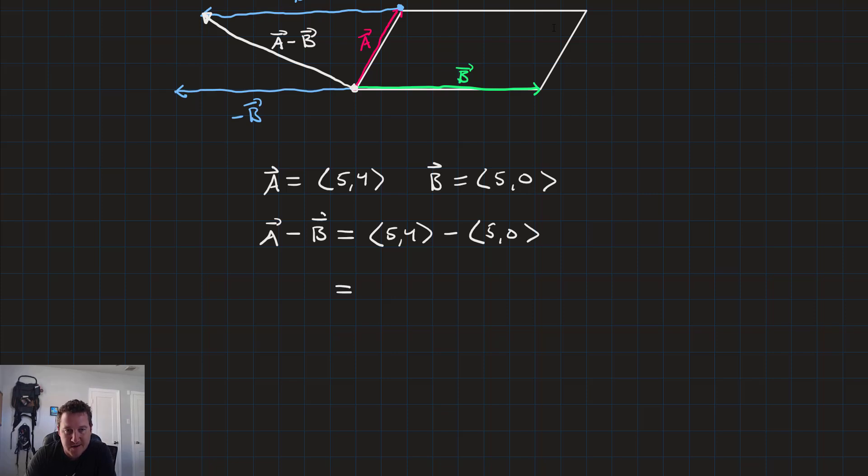A minus b is equal to 5 and 4 minus 5 and 0. And when we do it this way, we can just do subtraction like normal. 5 minus 5 and 4 minus 0. That leaves us with a vector that's 0 and 4. So there's some subtraction.